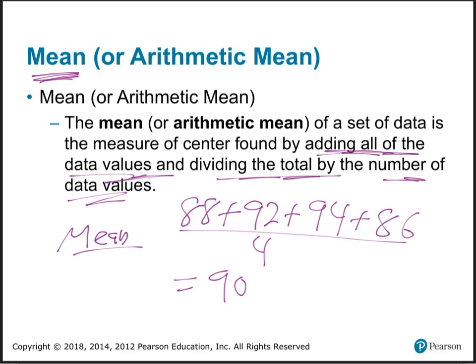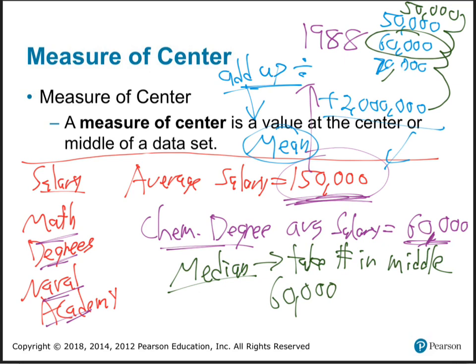If you add up the salaries of everyone who graduated the same year from the Naval Academy with math degrees — $50,000, $50,000, $60,000, $70,000, and then David Robinson's $2 million from the Spurs — and divide by five, you get some crazy big number like $150,000. That's not the middle of those numbers. That's not what you'd expect if you're going to get your math degree at the Naval Academy — that's not the typical salary.